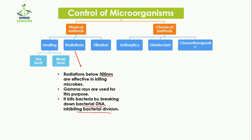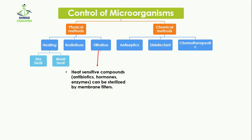The filtration method is used when heat-sensitive compounds — such as antibiotics, hormones, or enzymes — need to be sterilized. These compounds can be sterilized using a membrane filter. When the mixture is poured through the filter, only pure compounds pass through, while all bacteria and microorganisms stick to the filter. In this way, filtration controls microorganisms.